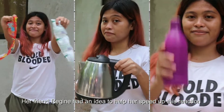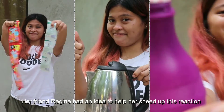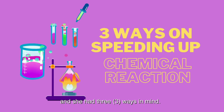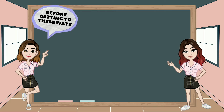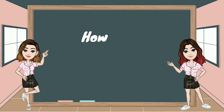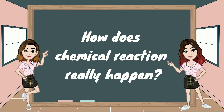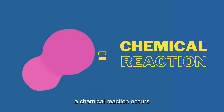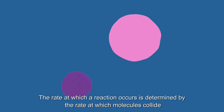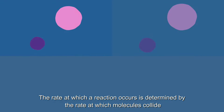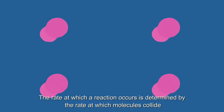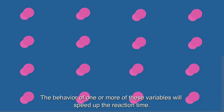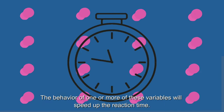Her friend Regina had an idea to help her speed up this reaction and had three ways in mind. But before getting to these ways, let's find out: how does a chemical reaction really happen? When the molecules of the reactants collide in the reacting system, a chemical reaction occurs. The rate at which a reaction occurs is determined by the rate at which molecules collide. The behavior of one or more variables will speed up the reaction time.